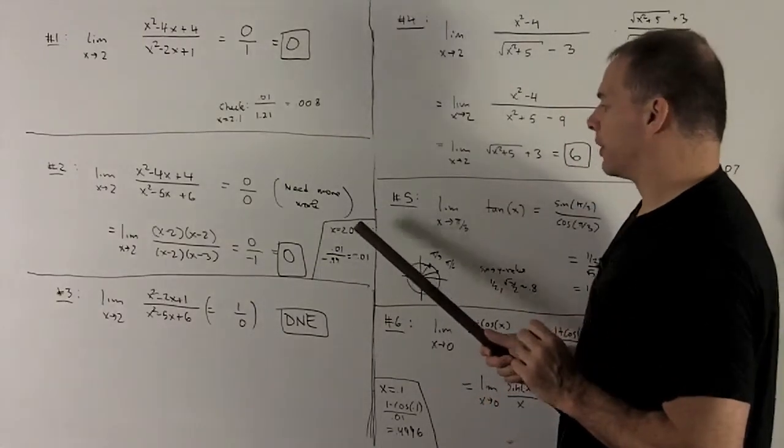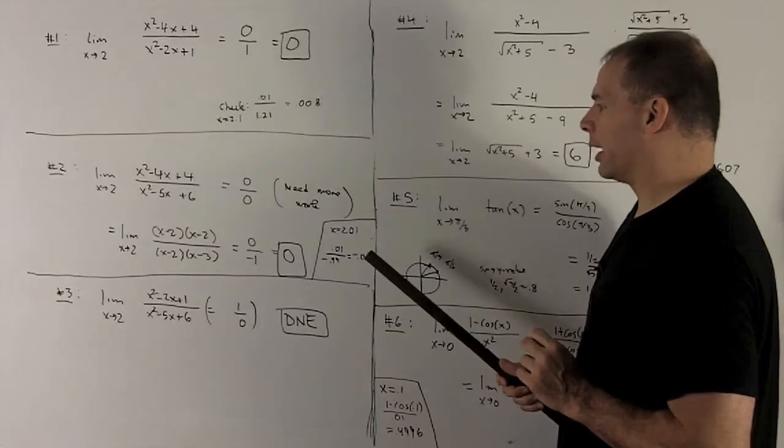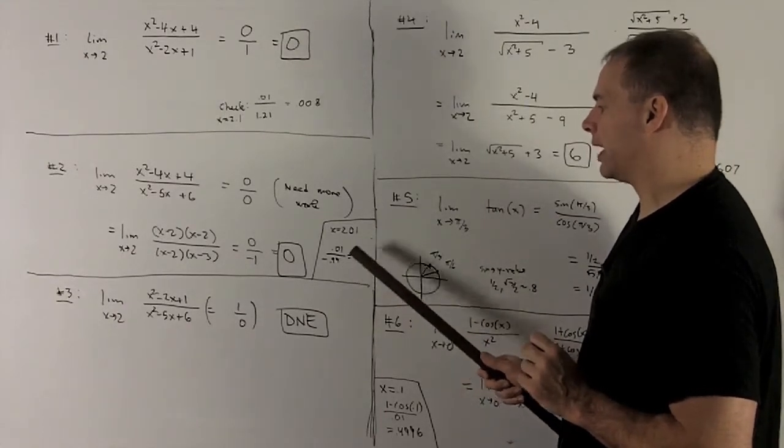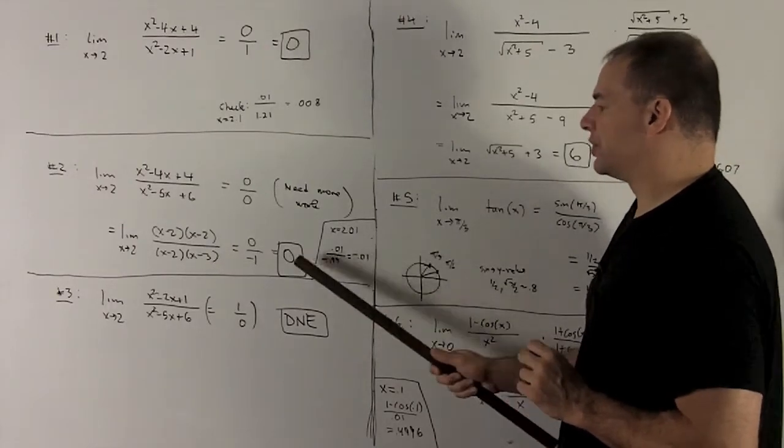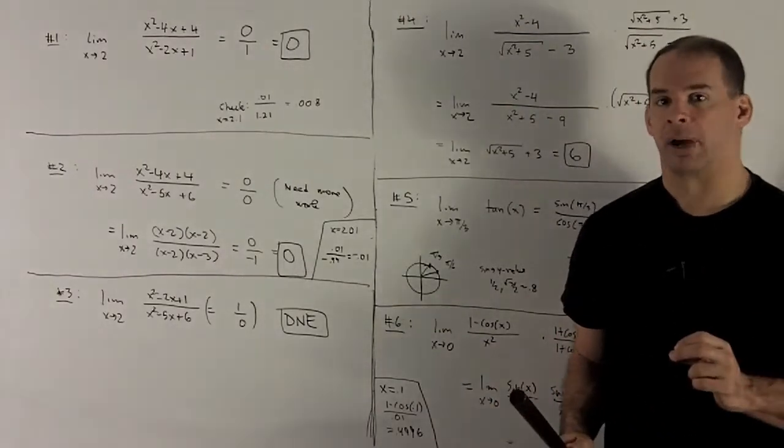Again, we check. So if I put 2.01 in there, I'll get 0.01 over minus 0.99, and that's going to reduce to minus 0.01, which is very close to 0, so I believe that's my correct answer.